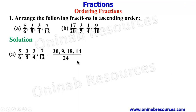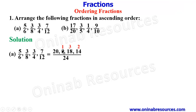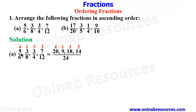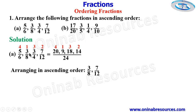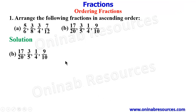We can now determine which is the smallest. The order is: 9, then 14, then 18, then 20. This means the smallest fraction is 3/8, followed by 7/12, then 3/4, and finally the largest is 5/6. So arranged in ascending order: 3/8, 7/12, 3/4, and 5/6.